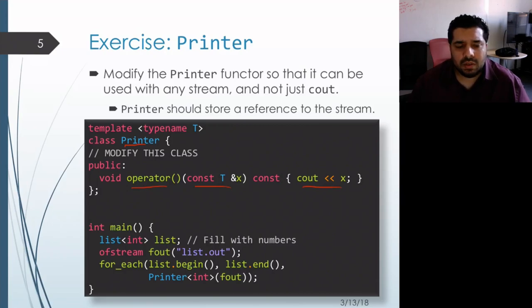And what we'd like to do is generalize this. So rather than just printing out to cout, we can print out to another stream that's saved as a member variable inside of this printer class template.